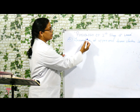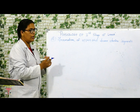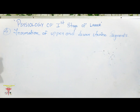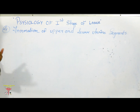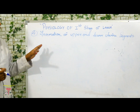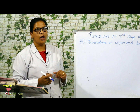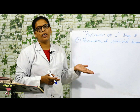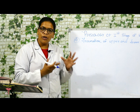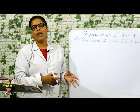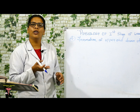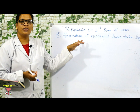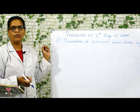The fourth physiological change during the first stage of labor is the formation of upper and lower uterine segments. The whole uterine body is divided into two different segments: the upper uterine segment and the lower uterine segment. We will see how each segment forms and how they work.